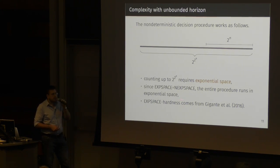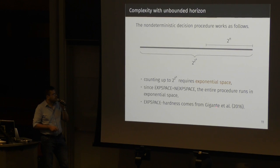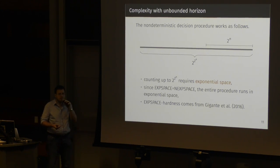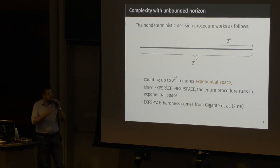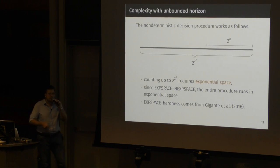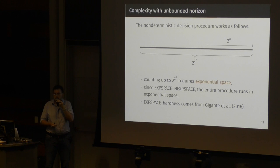The EXPSPACE hardness comes from our previous work because, as I told you, we've shown that this language is expressive enough to capture temporal PDDL, so the temporal parts of PDDL 2.1. And Rintanen, in a previous paper, showed that this language is EXPSPACE complete, so having this reduction, the hardness comes from there. So this is the EXPSPACE completeness of the language without bounded horizons.